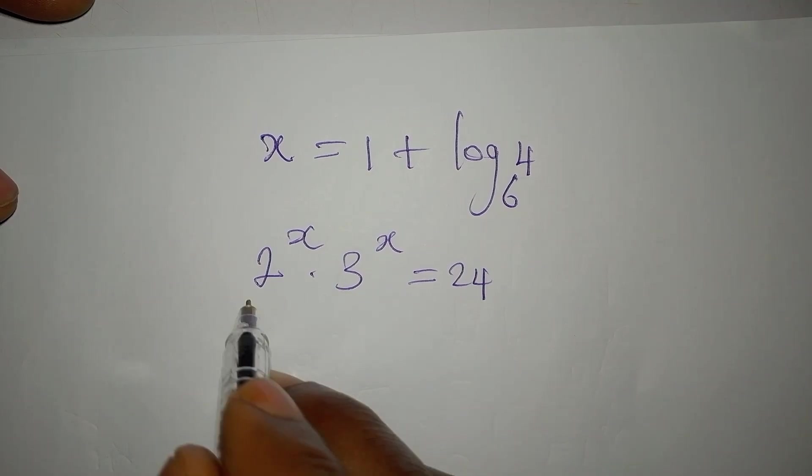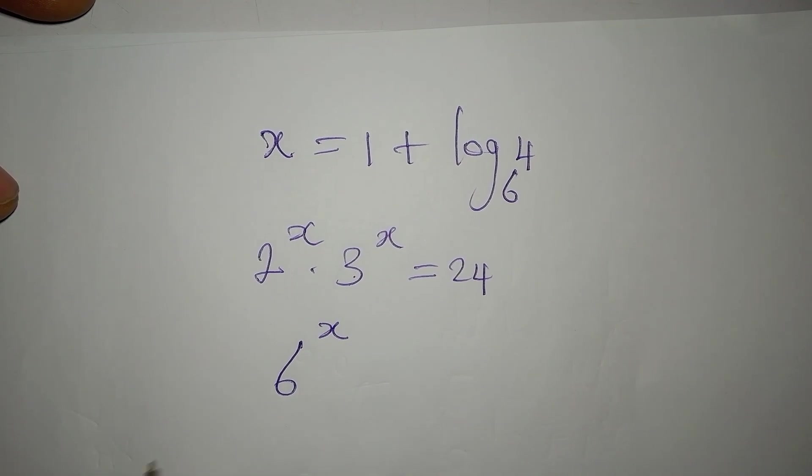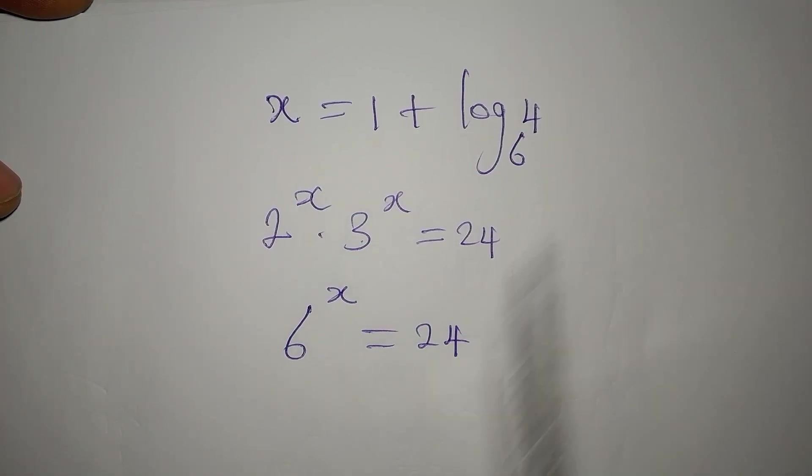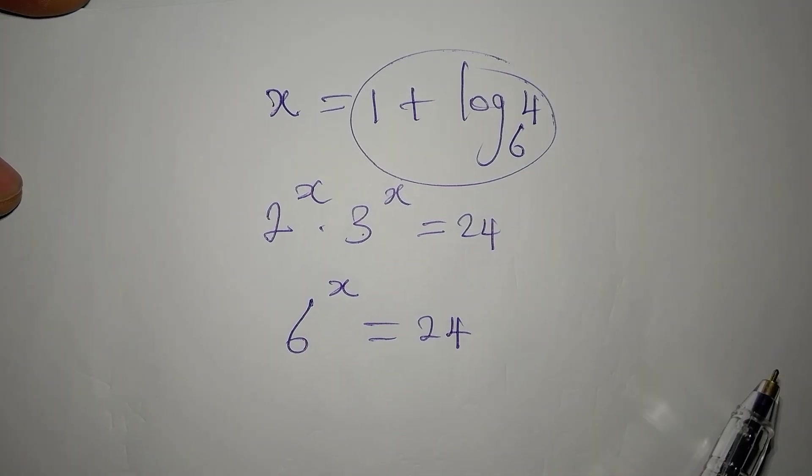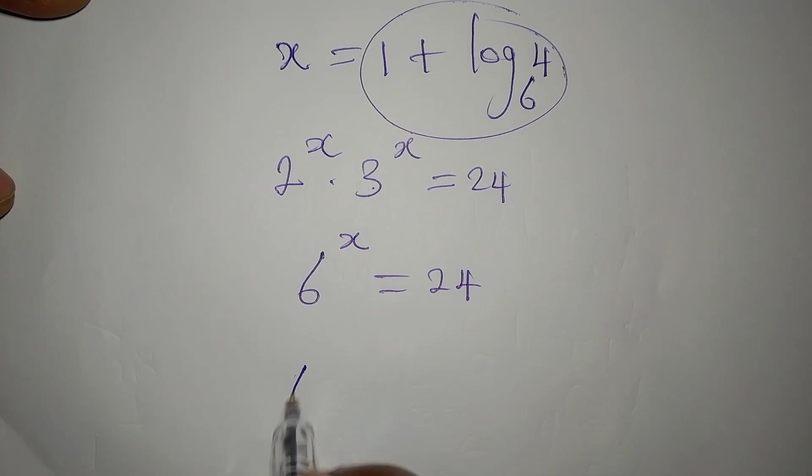So now we've said that these can be multiplied to get 6 to the power of x, which equals 24. And this is our x now, so let's put it into this equation.